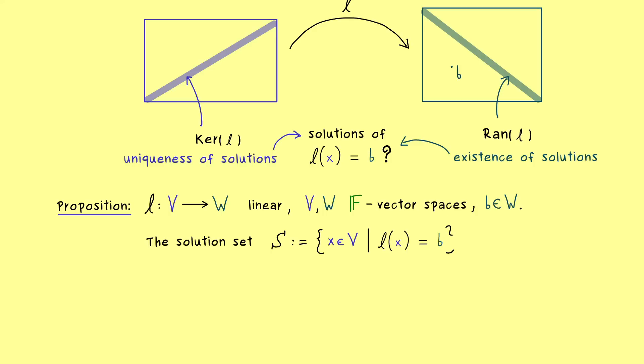And now we get two cases for S. Either it's empty or it's an affine subspace. The first case we obviously have if b is not in the range of l. In the second case we know that there is at least one solution and we call it x₀. And now we get all the solutions by simply adding the kernel of l to x₀.